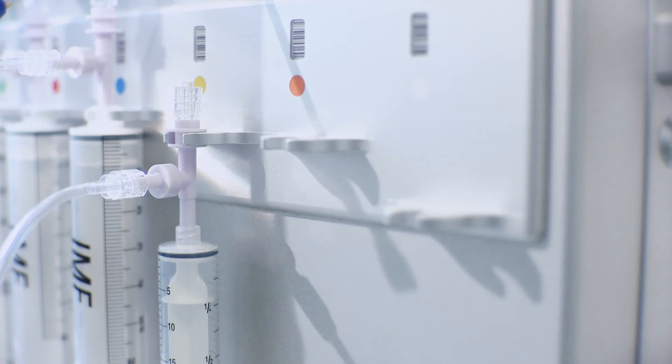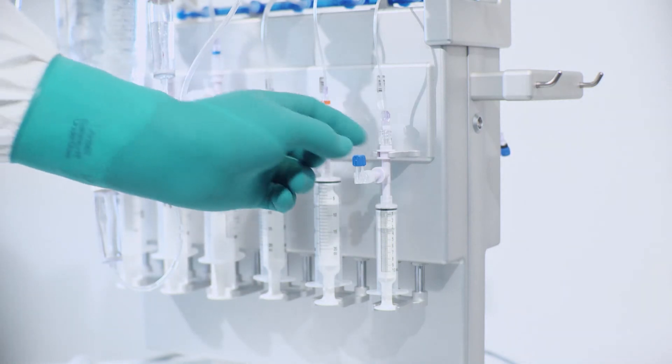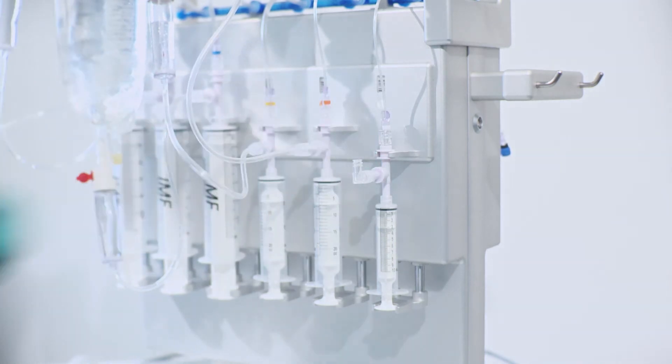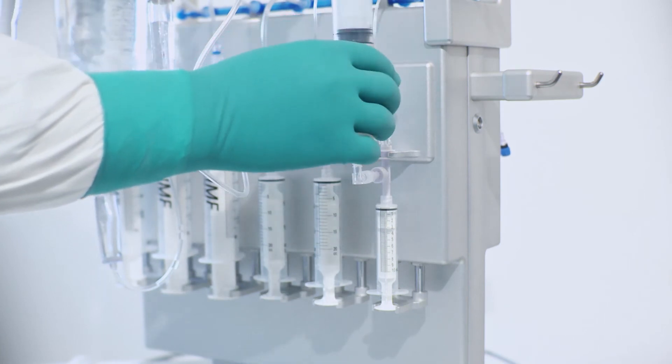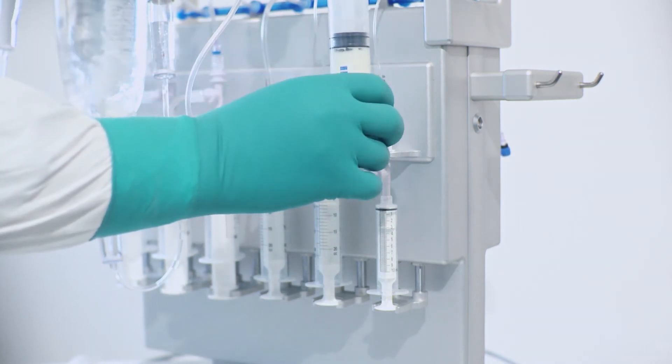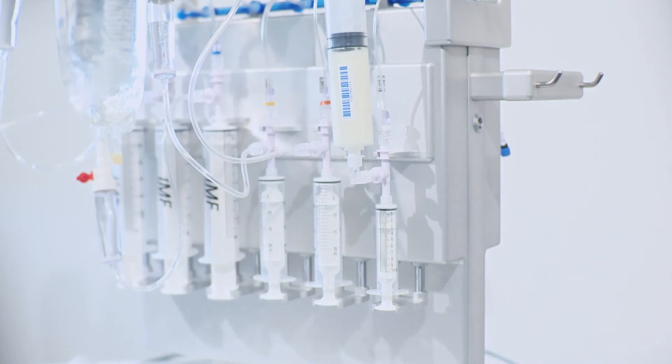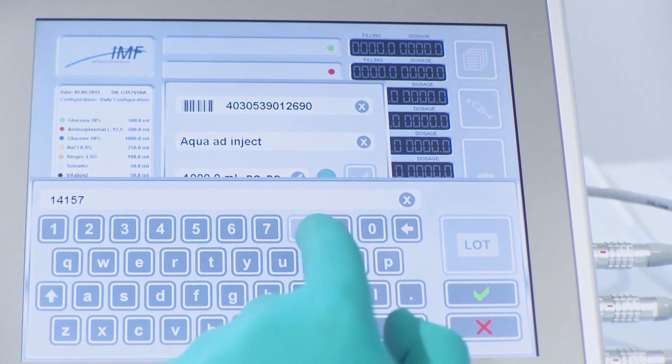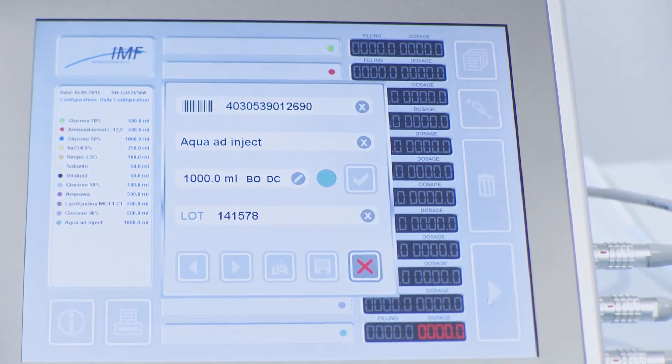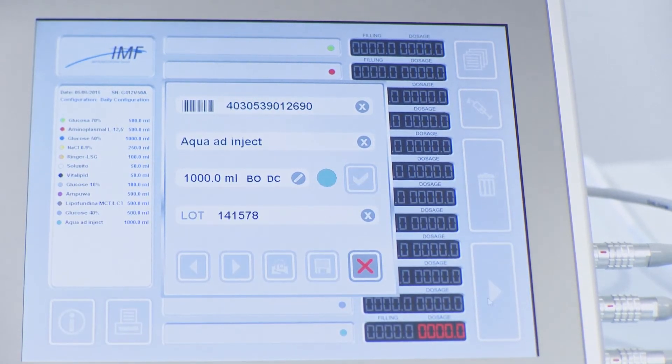There are three different connectors available. Drip chamber spike, vented, for big bottles or bags and with a 15 micron particle filter. This will stop particles and possible rubber particles from the coring of the spike. Mini spike, also vented, ideal for vials or small bottles. Luer lock connector for the connection of reconstituted ingredients, vitamins or trace elements.